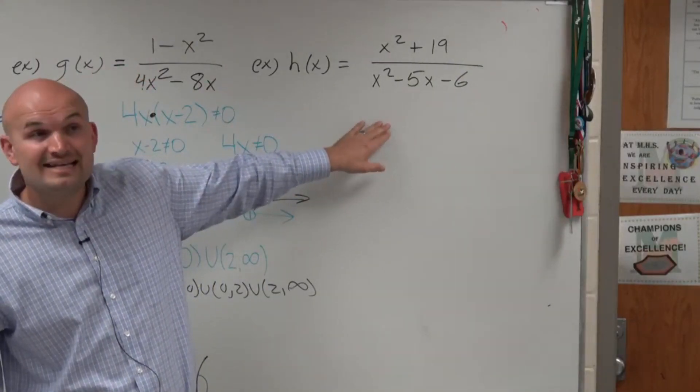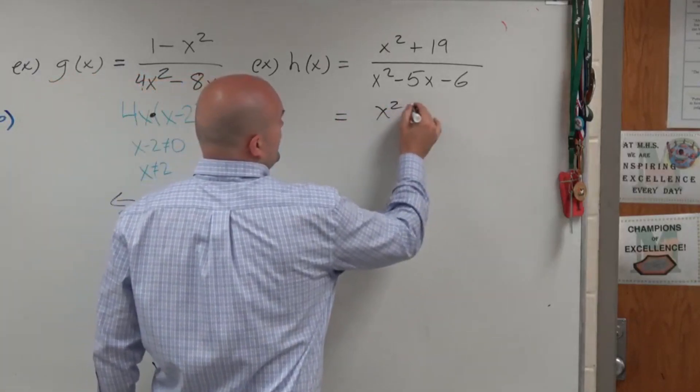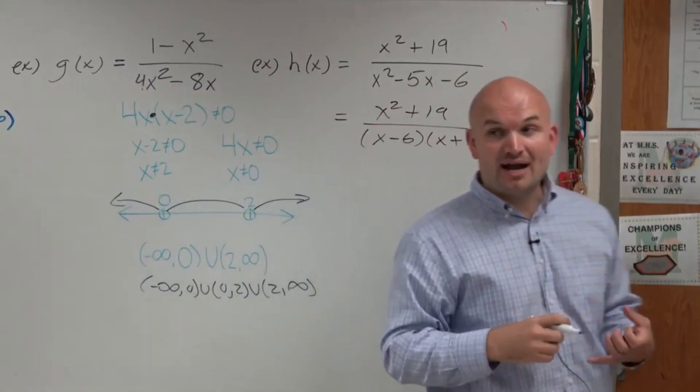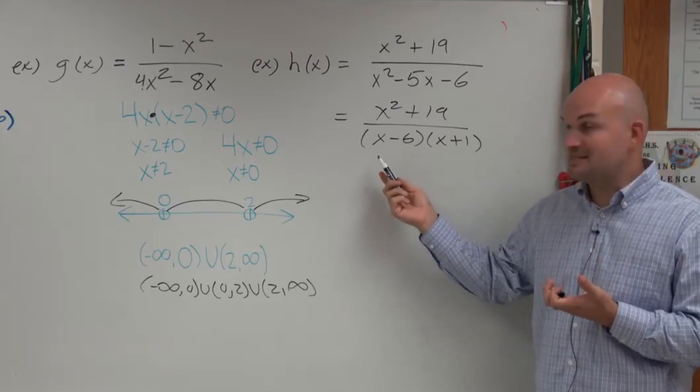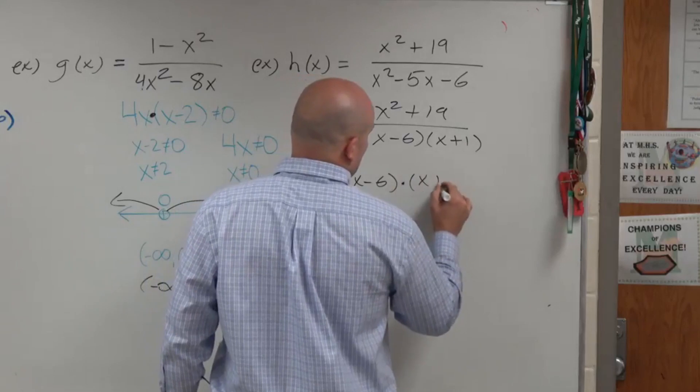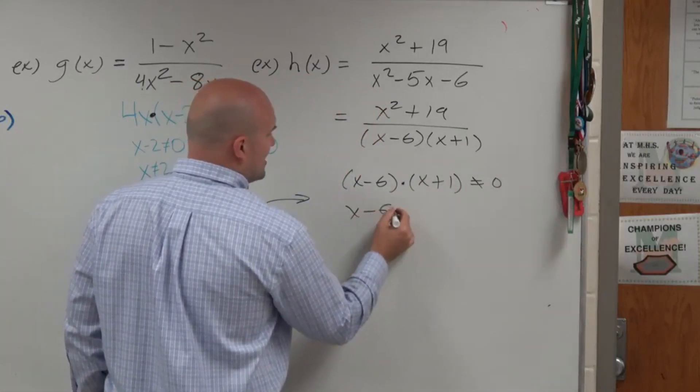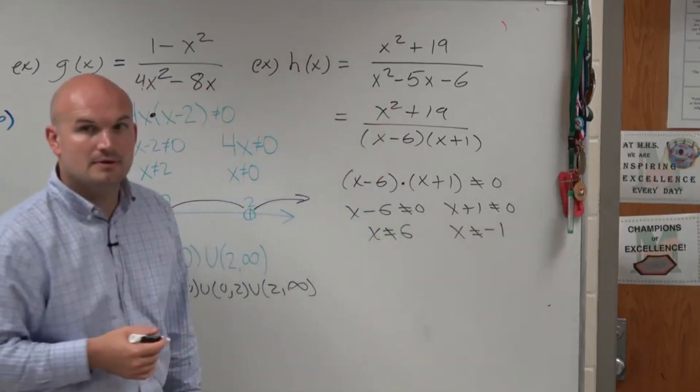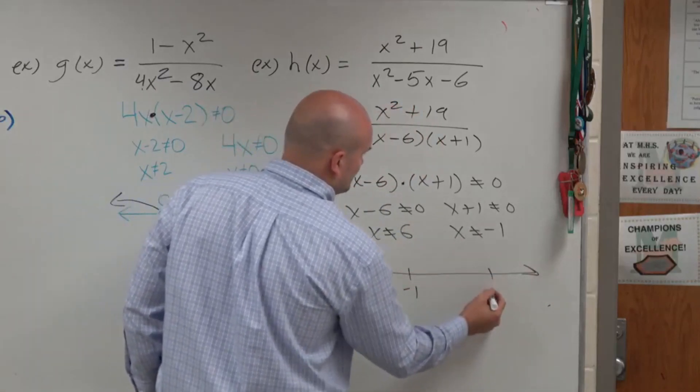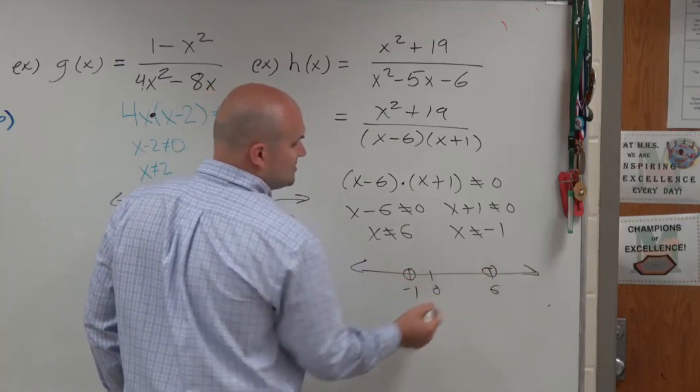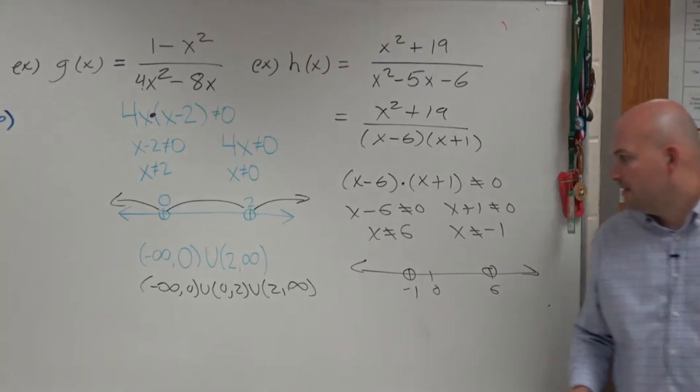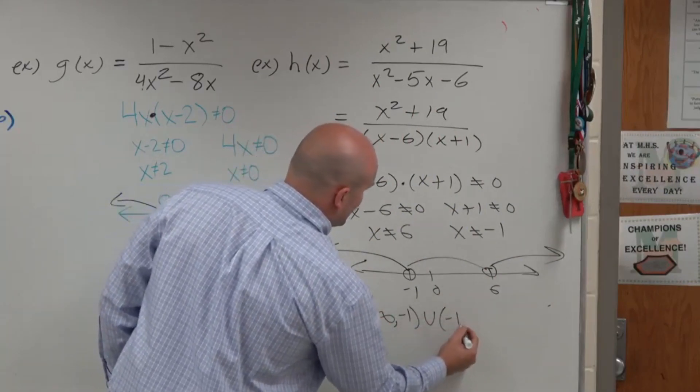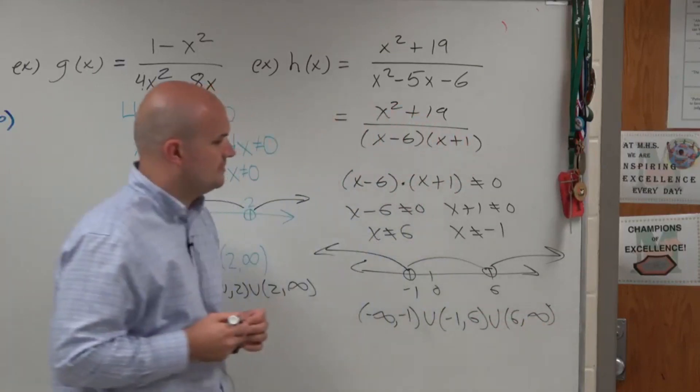You can immediately say, hey, trinomial, I need to rewrite this as a product. So x squared plus 19 all over, let's see, this is going to be x minus 6 times x plus 1. Now that I've rewritten it as a product, we know that the only constraints here are whatever make my denominator equal to 0. So I have x minus 6 times x plus 1 cannot equal 0, and I can just apply the 0 product property. Therefore, x cannot equal positive 6 and x cannot equal negative 1. Now I just go to a number line. I'm going to say negative 1, 6, here's 0. Open circle, open circle, because those are two discontinuities. And the graph is going to keep everything in there. So we'd have negative infinity to negative 1, union negative 1 to 6, union 6 to infinity.